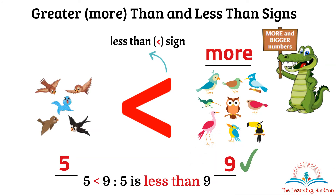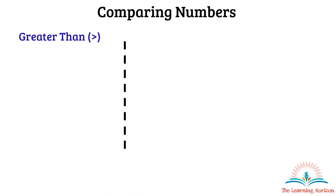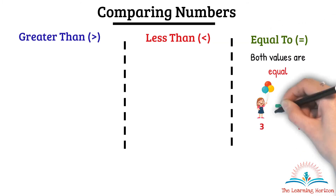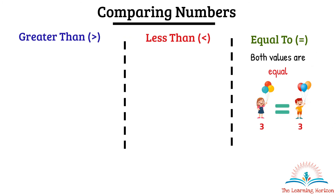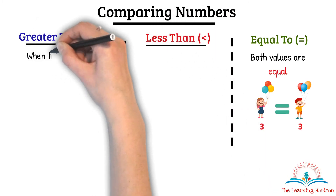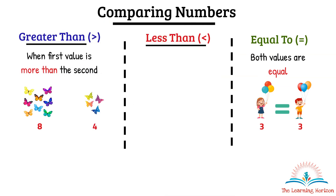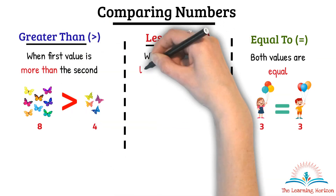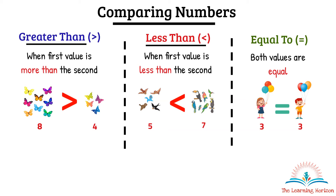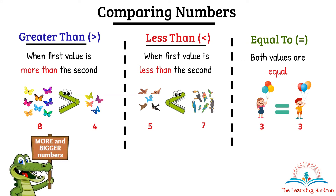Let us now summarize comparing numbers using greater than, less than and equal to signs. When we compare two numbers: if both values are equal we use the equal sign, and when the values are different we either use the greater than sign or the less than sign. When the first value is more than the second we use the greater than sign, and when the first value is less than the second we use the less than sign. To remember these signs easily, we can think of them as an alligator mouth — this alligator is hungry and feeds on more and bigger numbers.